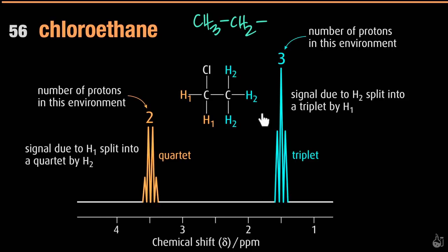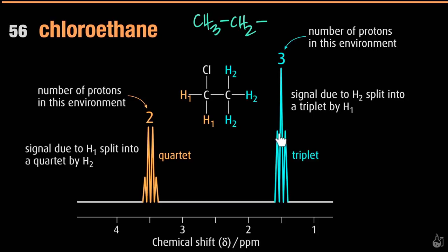This is a very important pattern to remember: any molecule with an ethyl group (CH3CH2–) will give a triplet for the CH3 peak (height 3, split 3 ways because adjacent CH2 has 2 protons) and a quartet for the CH2 peak (height 2, split 4 ways because adjacent CH3 has 3 protons). The triplet tells you there are 2 H's on the adjacent carbon; the quartet tells you there are 3 H's on the adjacent carbon.